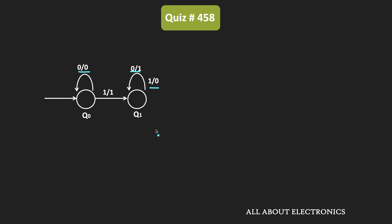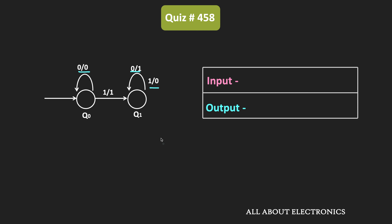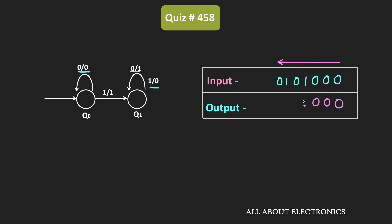To understand how this machine works, let us take one binary number. Starting from the LSB, this input is applied: 0001010. Whenever the input is 0, the output of the machine will also remain 0, and the machine will remain in the q0 state until it encounters the first 1. Up to that point, the output of the machine will remain 0. As soon as 1 is received as an input, the output of the machine will also become 1.